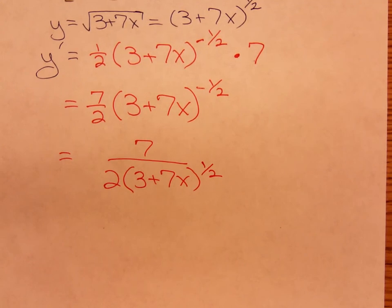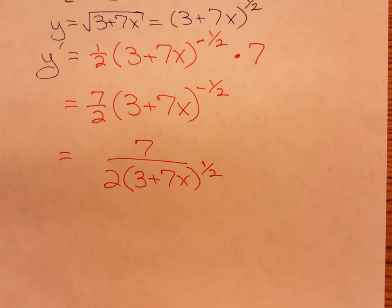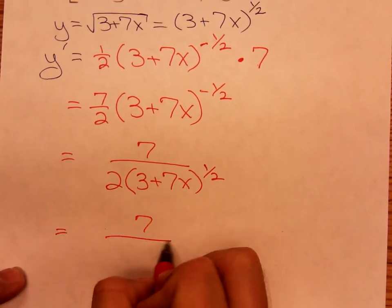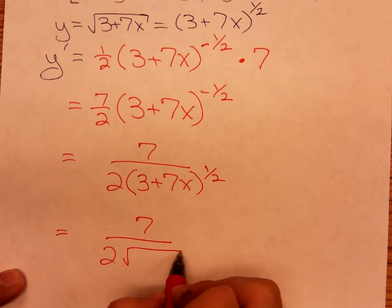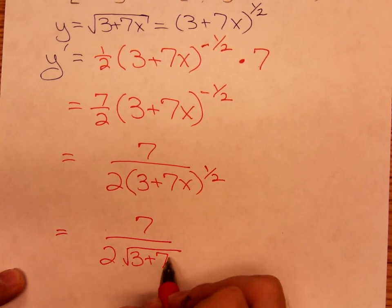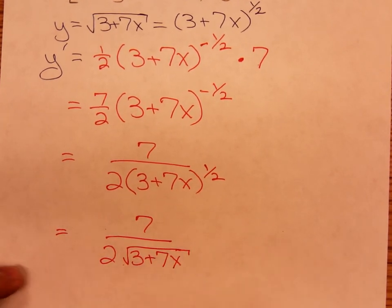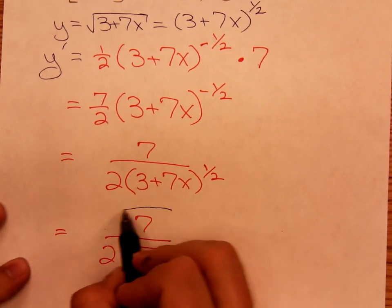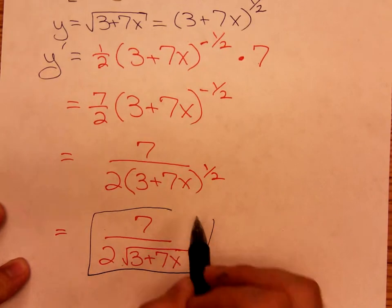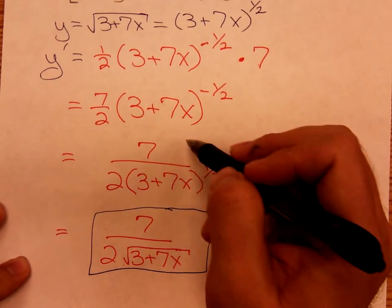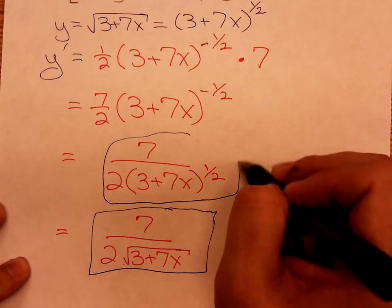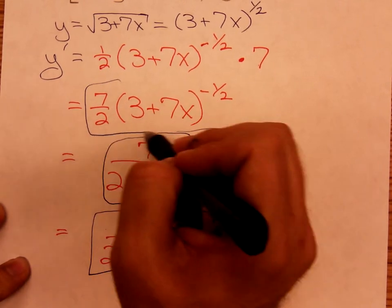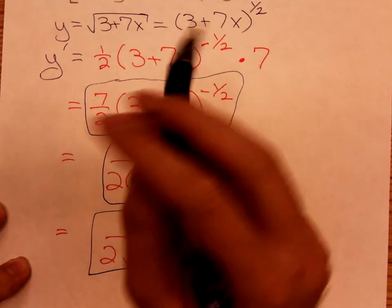And let's suppose we wanted to convert that back to a radical in place of that 3 plus 7x to the one-half. We would have 7 over 2 square roots of 3 plus 7x. For the homework, either one of these three, here, here, or here, would be acceptable.